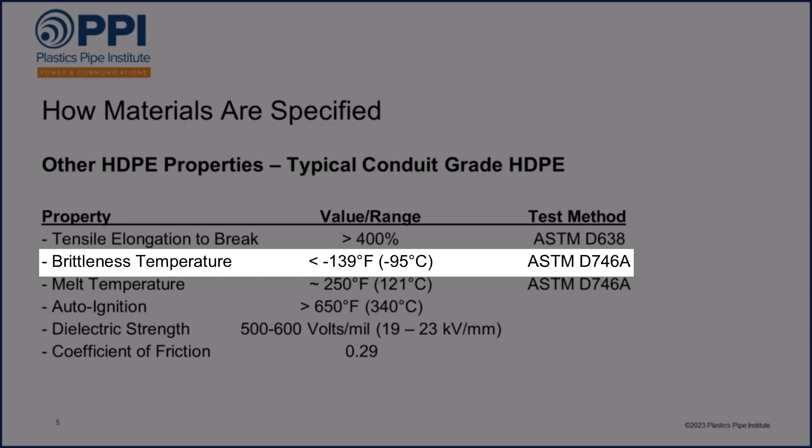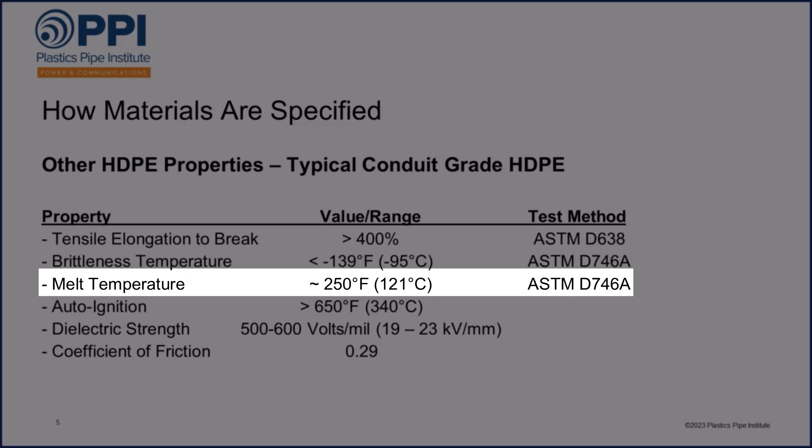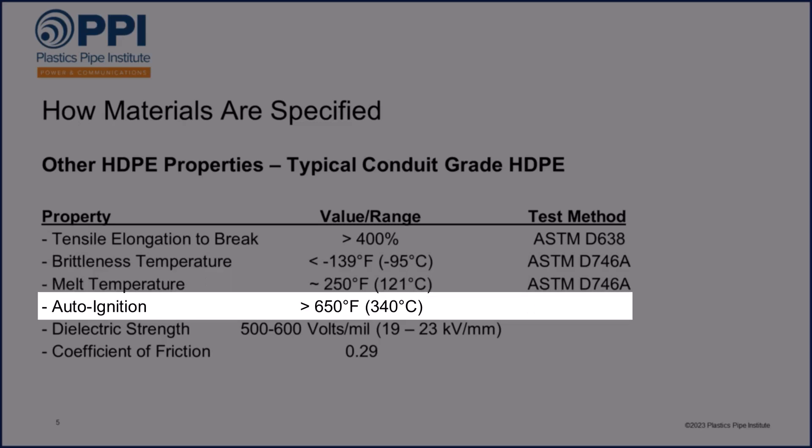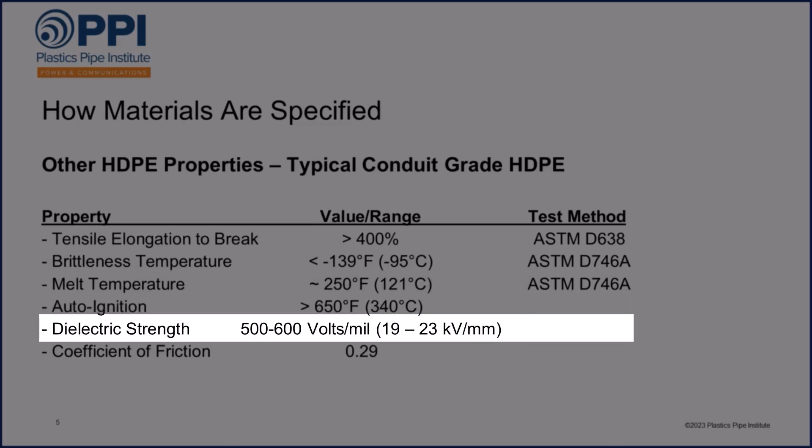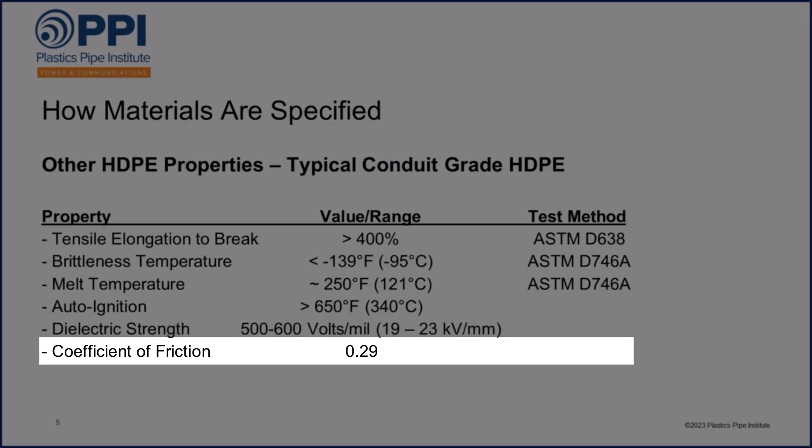Its brittleness temperature, otherwise known as glass transition temperature, where it actually becomes brittle, is below minus 139 degrees Fahrenheit. Its melting temperature is around 250 degrees Fahrenheit. Its auto-ignition temperature is over 650 degrees Fahrenheit. It has a dielectric strength value, applicable to some Conduit applications, of between 500 to 600 volts per mil. And its coefficient of friction is approximately 0.29, which makes it slippery — good for cable pulling.